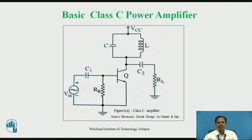The output amplified signal is provided to load RL using capacitor coupling, so the output load resistance RL is coupled at the output using capacitor C2. The base-emitter junction, when the output collector current is zero in the absence of an input AC signal, acts differently. When an input AC signal is applied, the base-emitter junction of the power transistor — the base-emitter diode — along with capacitor C1 and resistor RL connected between base and emitter, acts as a diode clamper.